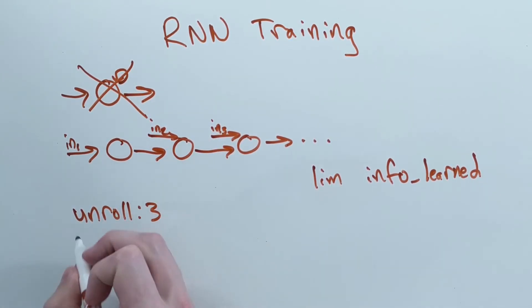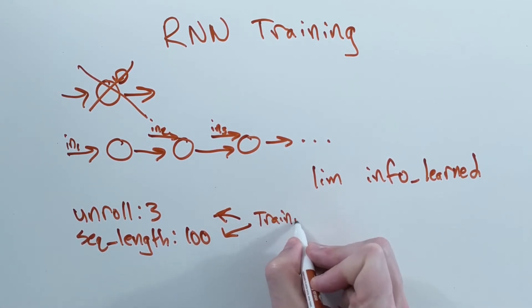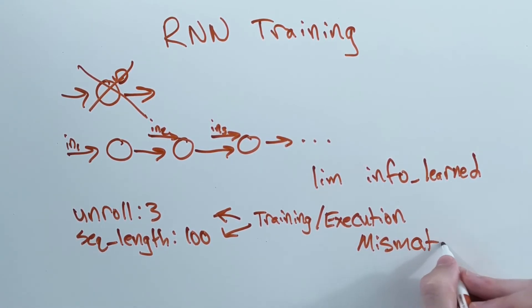For example, if you train an RNN and only unroll 3 steps, but then during execution you try a sequence with 100 steps, on step 99 the network isn't going to have any idea on how to handle the information from step 0 to 95 because it wasn't trained to use that information.